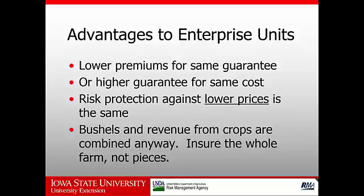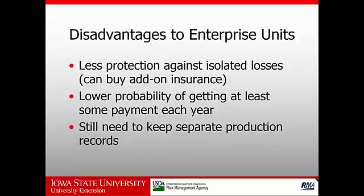We do give up some protection against lower yields, because the production from all of our land units is combined and co-mingled for purposes of calculating our actual revenue. If we have isolated losses — for example, a hailstorm that only affects a portion of our land — we may not get any payment if we get a normal or above-average crop on the rest of the land. This reduces the probability of getting at least a small payment each year. Some producers aim for at least a small payment from crop insurance annually, so they're probably better off with optional units. We still need to keep separate production records on each farm in case we want to go back to optional units or stop farming a particular rented farm.